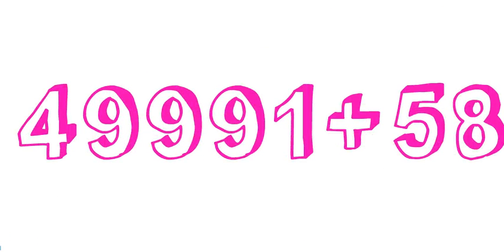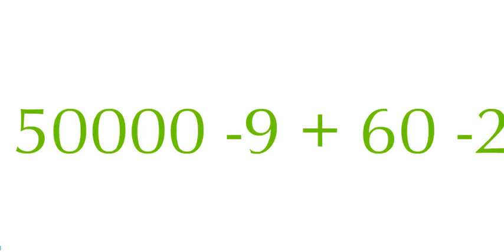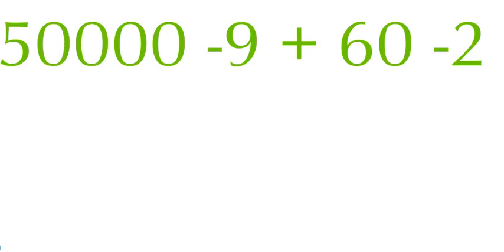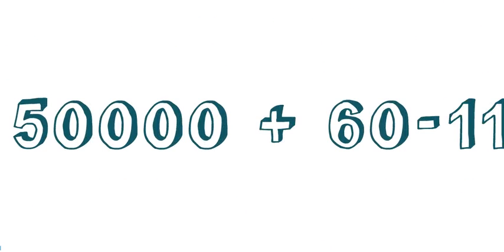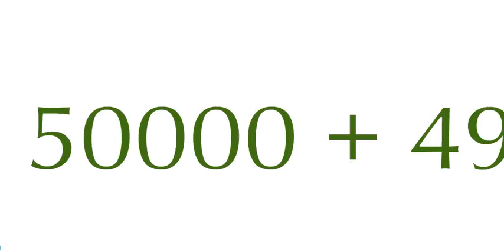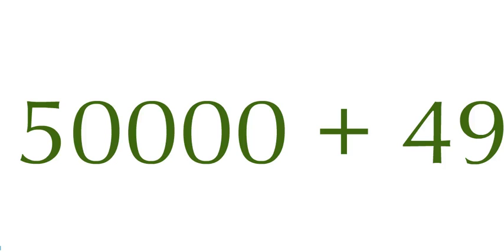Let's have another example: 4999 plus 58. Simplify both numbers, which gives us 50,000 minus 1 and 60 minus 2. Shift the larger numbers to one side and the smaller numbers to the other, giving us 50,000 plus 60, and minus 1 minus 2 makes minus 11, which gives us 50,000 plus 49. Add them and we get 50,049 as the answer. Easy?